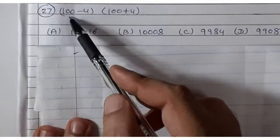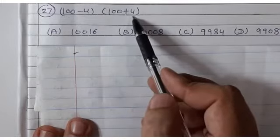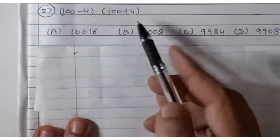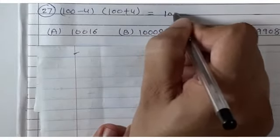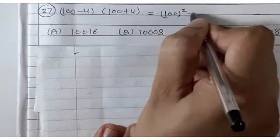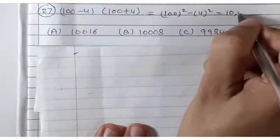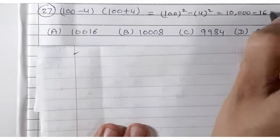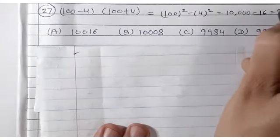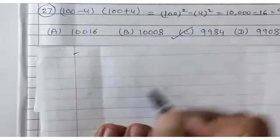Question number 27: (100 − 4)(100 + 4). This is (a − b)(a + b) = a² − b² = 100² − 4² = 10,000 − 16 = 9,984.